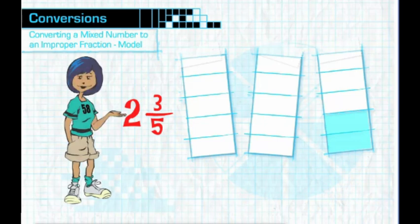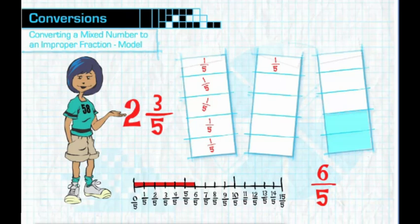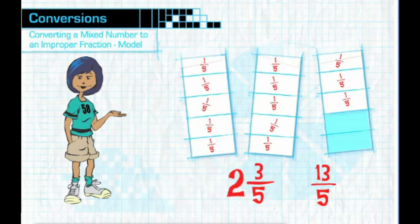So far, so good! Now, just like we did with the earlier model example, you simply count and total each of the white sections to convert the mixed number two and three-fifths to an improper fraction. Since each section represents one-fifth, you count: one-fifth, two-fifths, three-fifths, four-fifths, five-fifths, six-fifths, seven-fifths, eight-fifths, nine-fifths, ten-fifths, eleven-fifths, twelve-fifths, and thirteen-fifths. Congratulations! You just used a model to convert the mixed number two and three-fifths to the improper fraction thirteen-fifths.